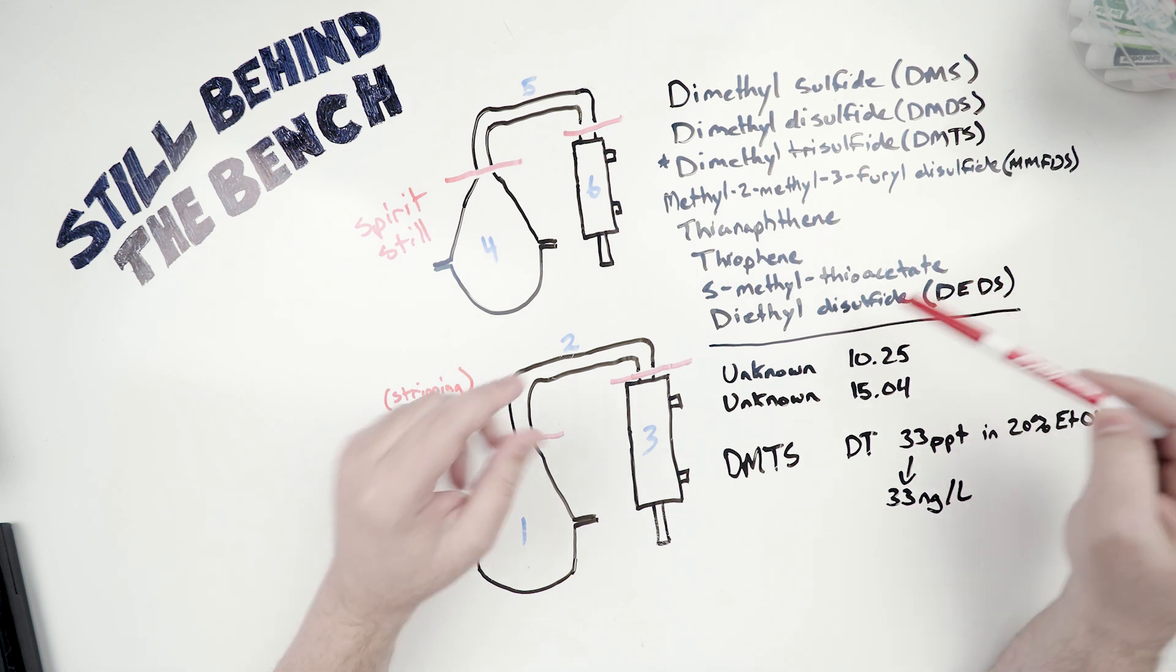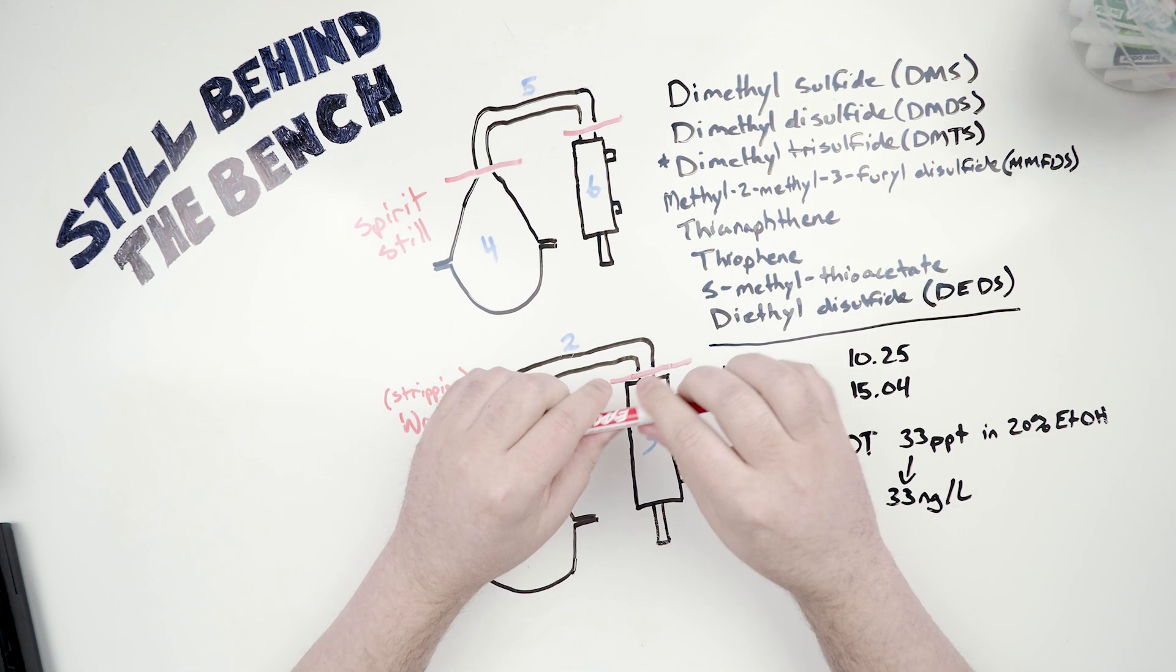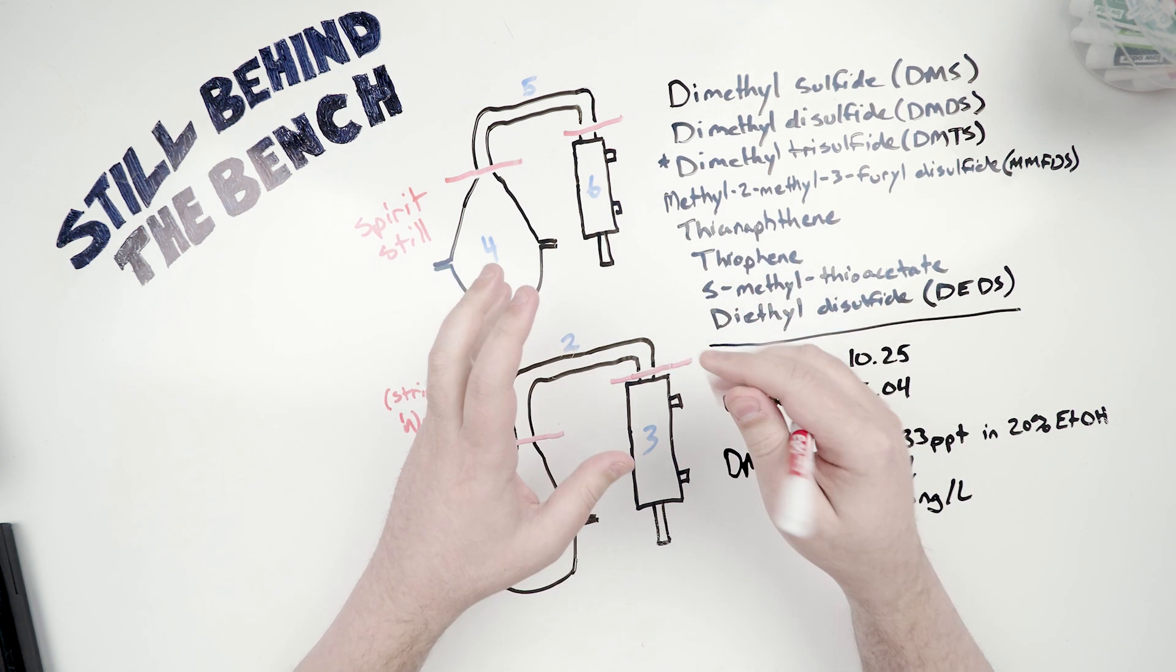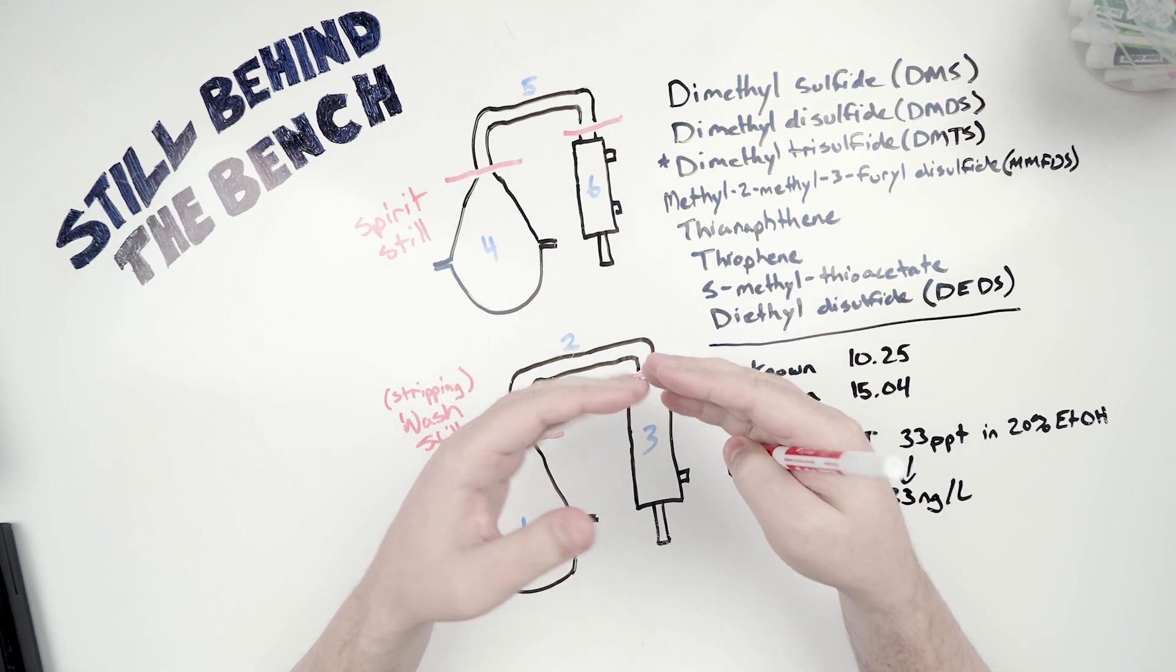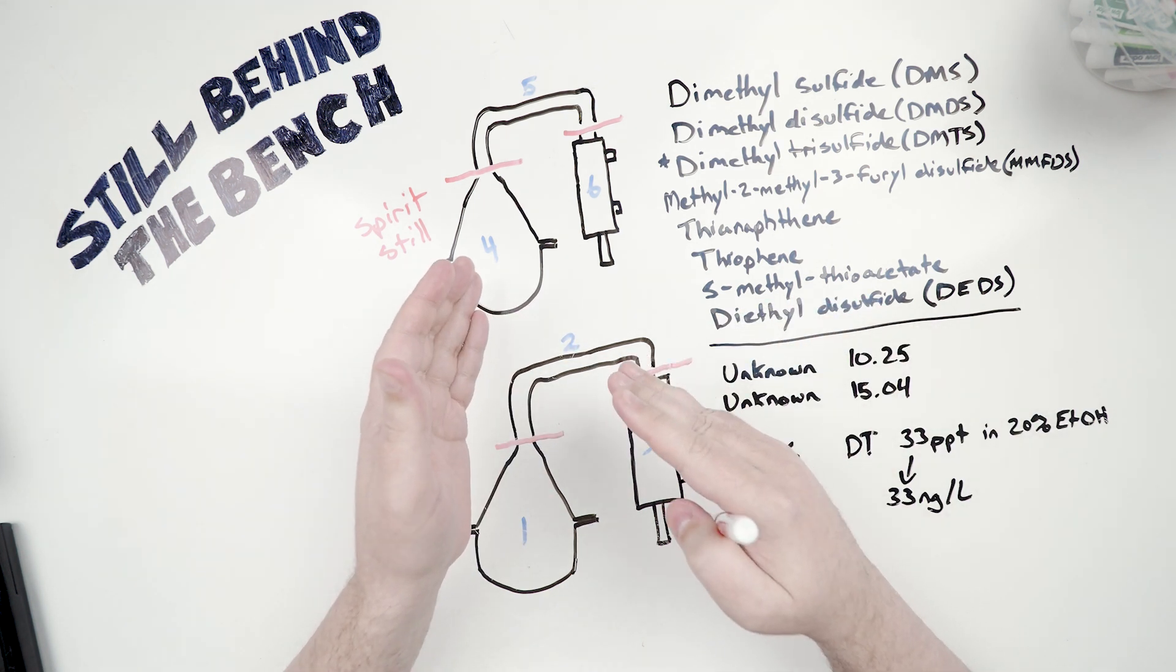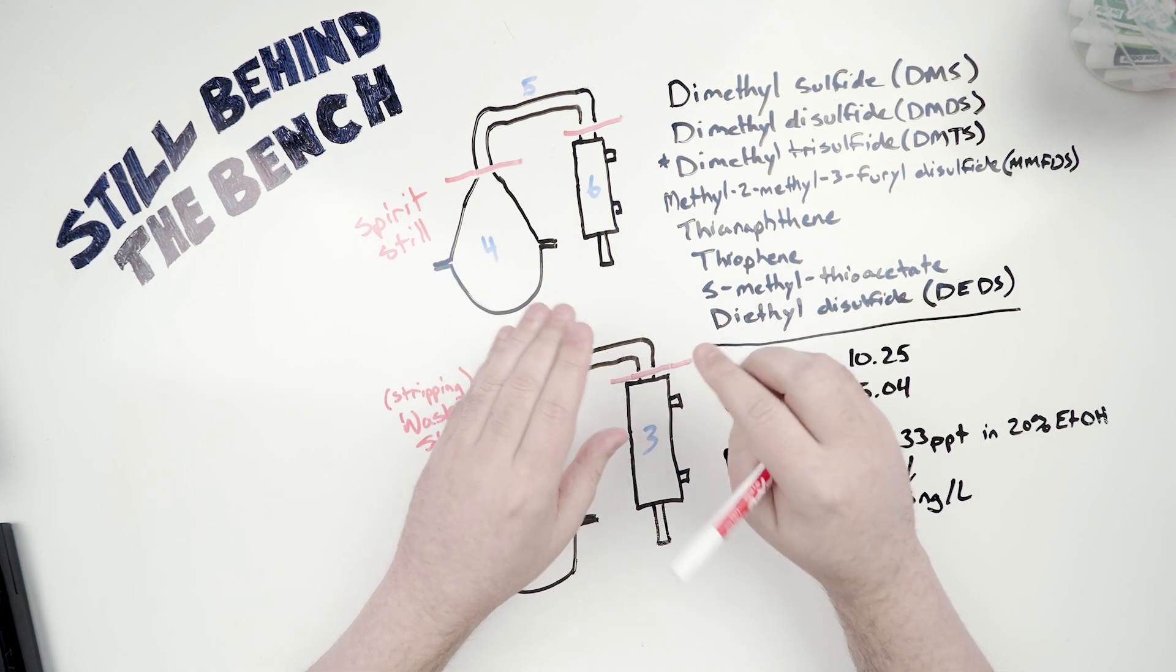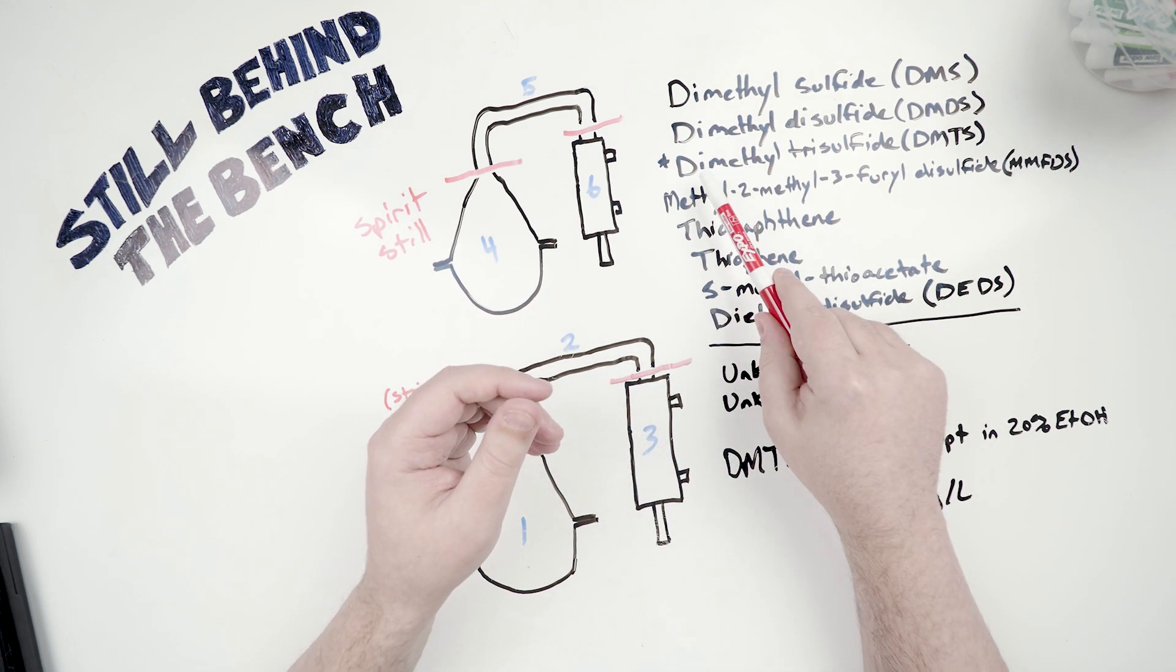What they found is between an all copper still setup versus an all stainless steel setup is that the copper still new make spirit, and new make is the distillate that comes out of your spirit run, they found that it was characterized as cereal, fainty, pungent, and clean aroma. But when they used the all stainless steel setup, it was described as less clean, and that less cleanliness was attributed to more sulfury and meaty aromas, specifically DMTS.